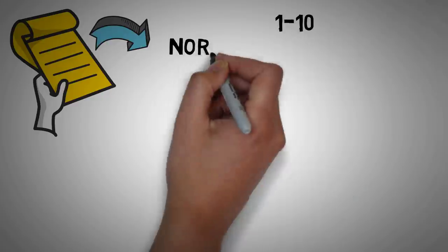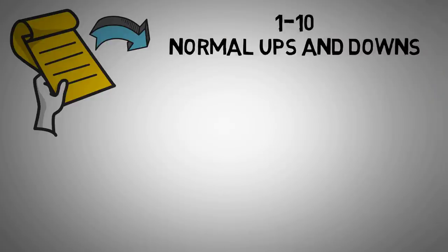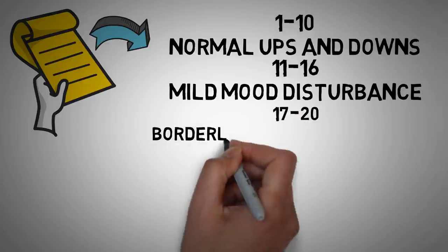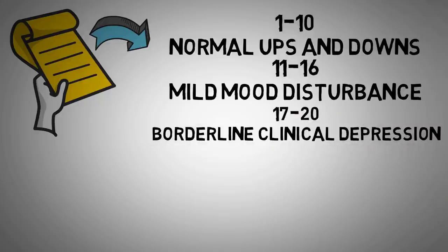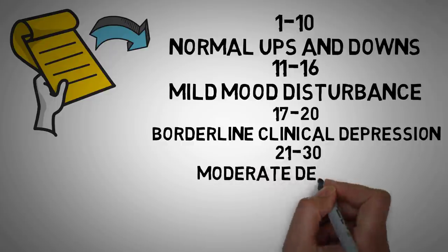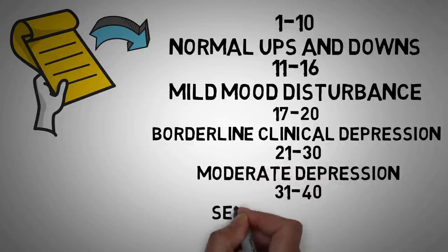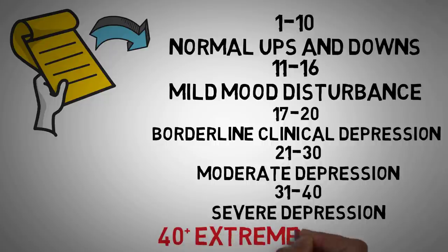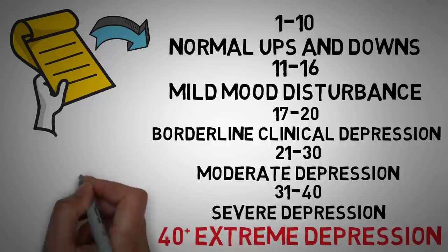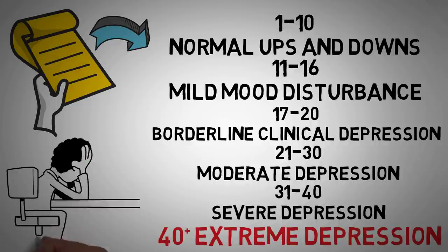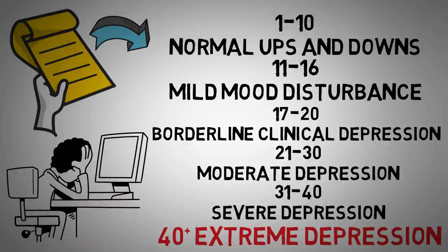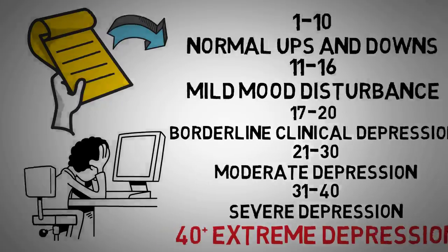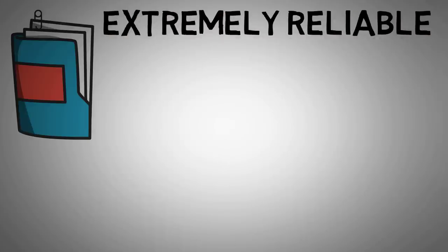The results will put you in a category. If you score 1 to 10, you're in normal ups and downs. 11 through 16 indicates a mild mood disturbance. 17 to 20 may indicate borderline clinical depression. 21 through 30 scores moderate depression. 31 through 40 is severe depression, and anything above 40 is extreme depression. There's really no need to take this test again and again throughout the week, because even if you're going through general ups and downs, you'll likely get the same answer the next day. The Beck Depression Inventory has also been considered extremely reliable, even after it has been translated and distributed throughout the world.